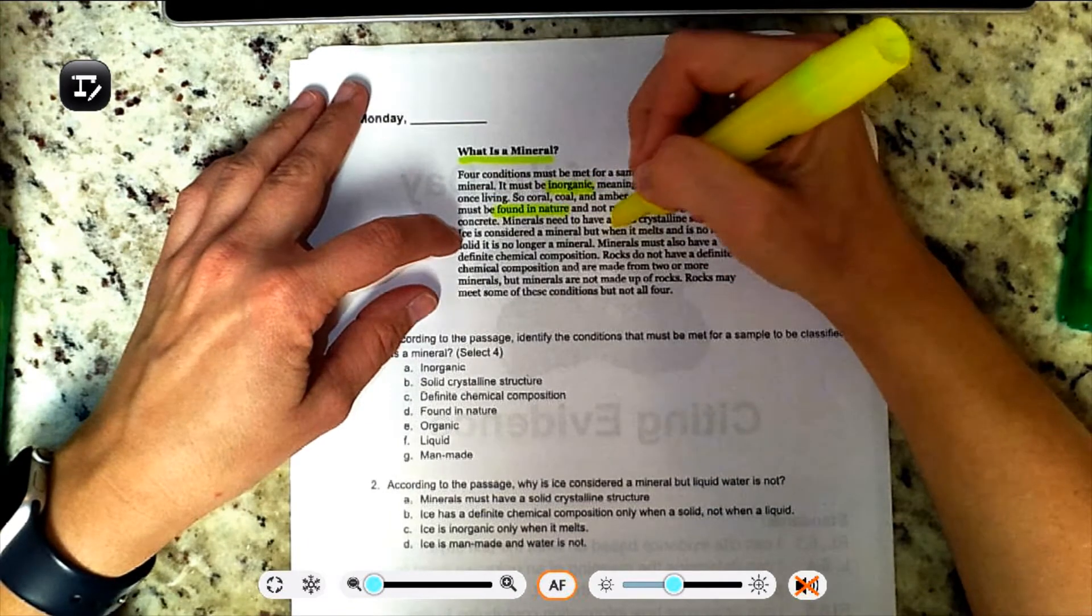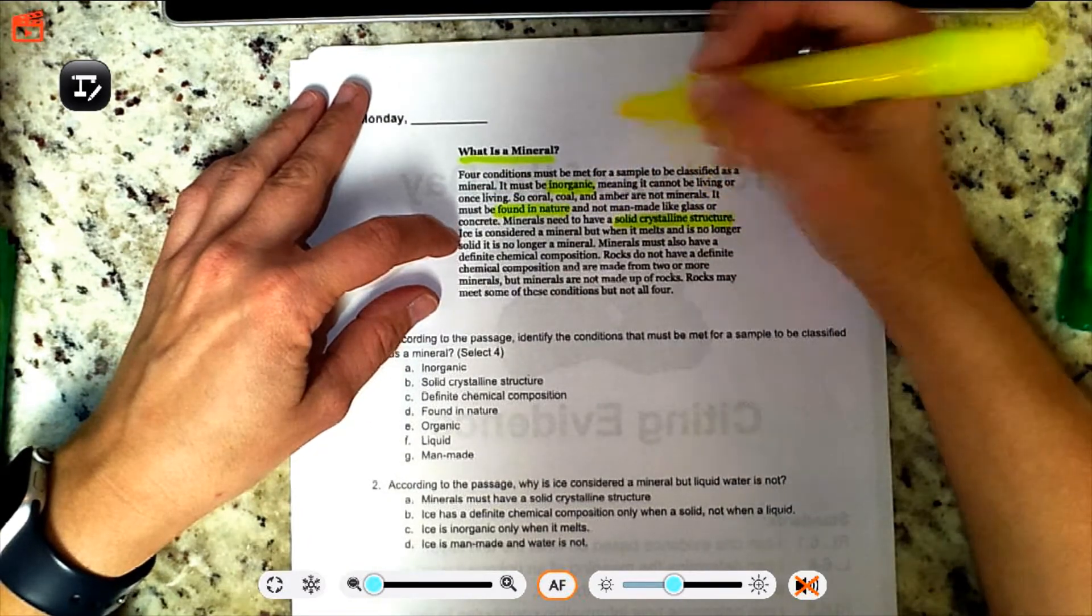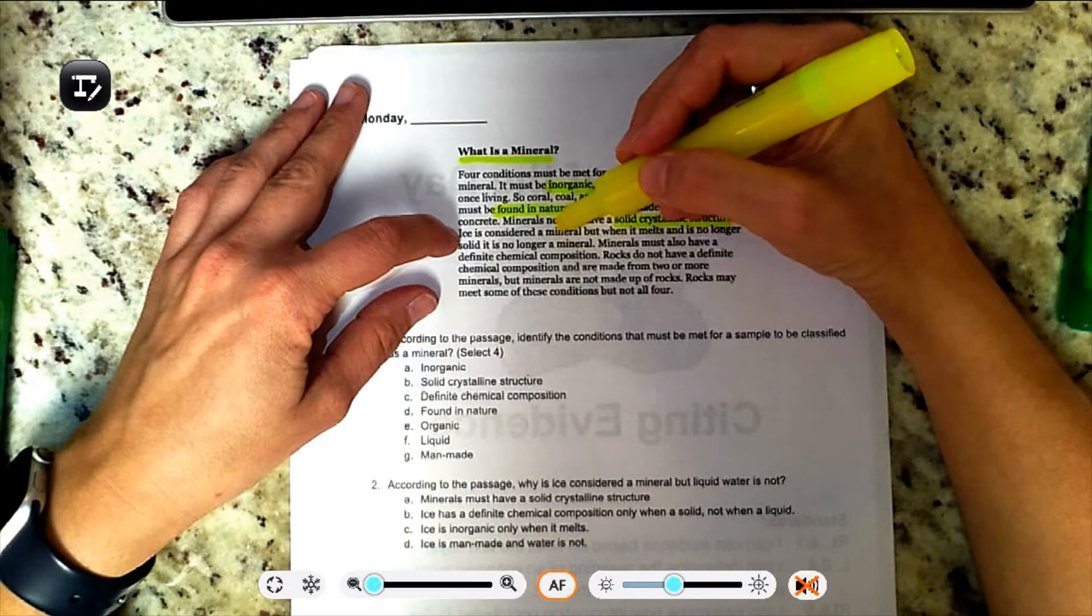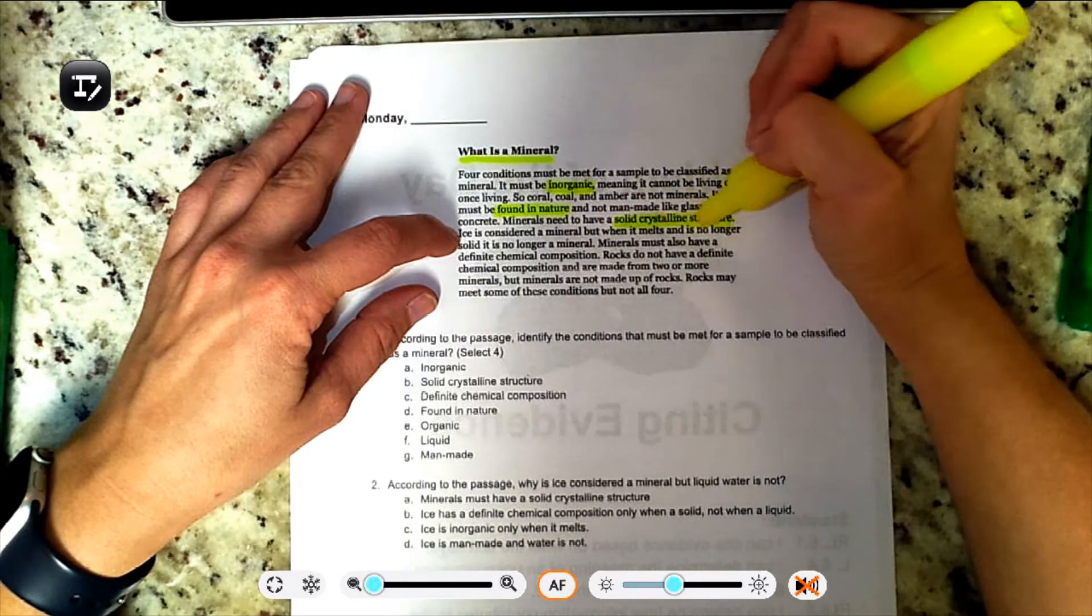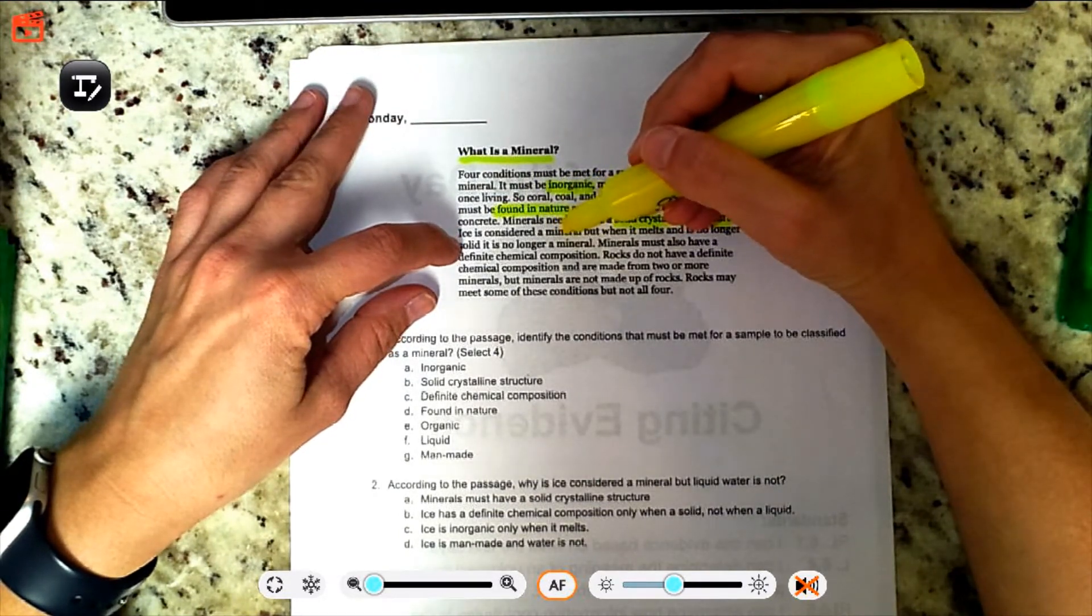Minerals need to have a solid crystalline structure. Ice is considered a mineral, but when it melts, it is no longer solid, so it is no longer a mineral.